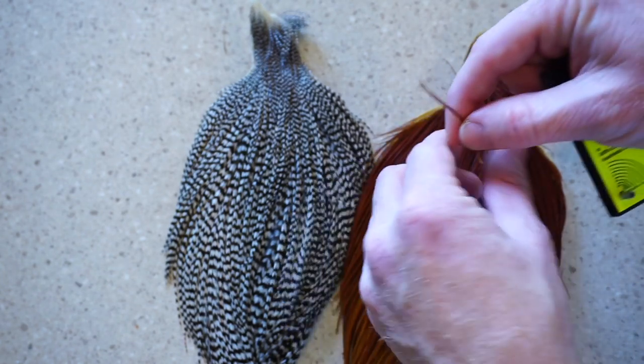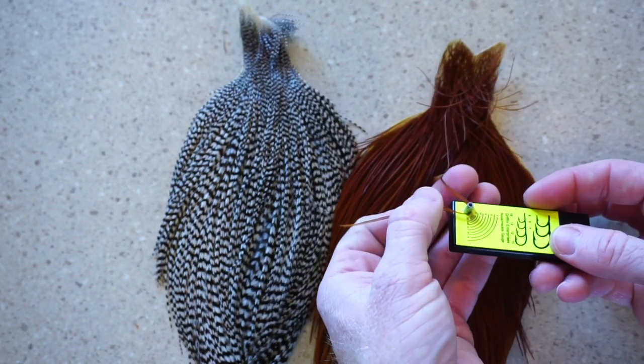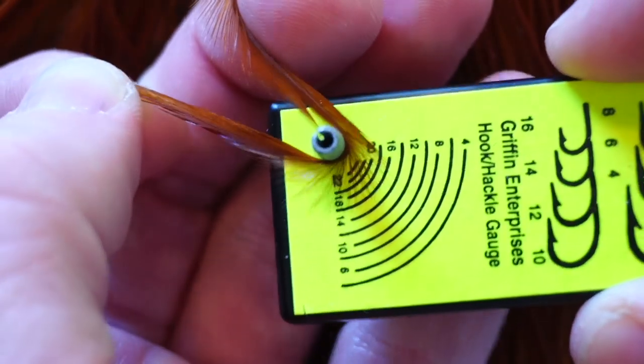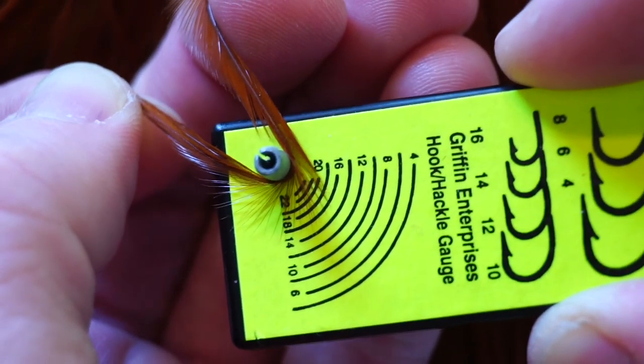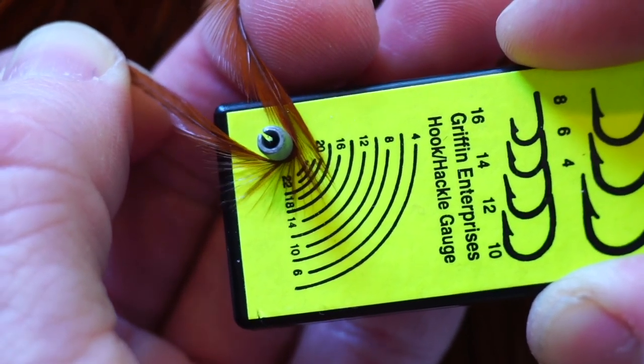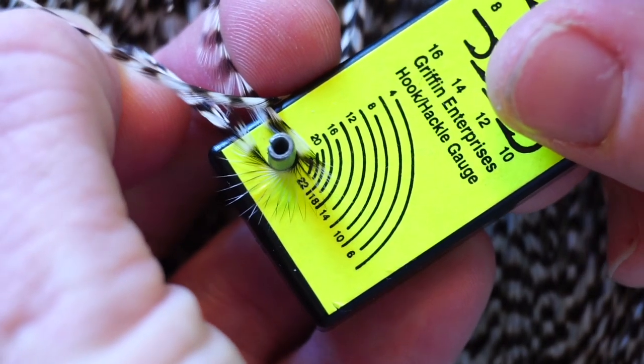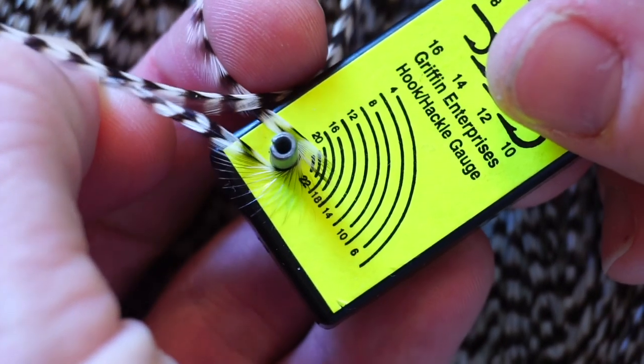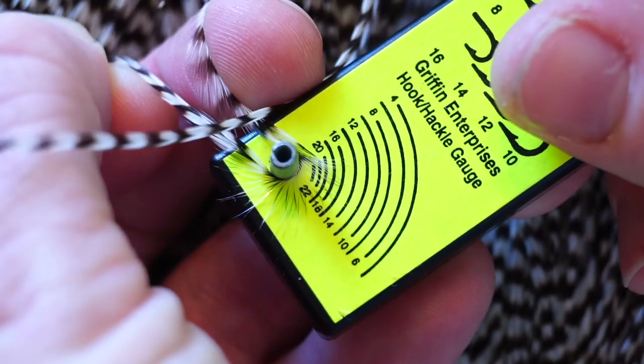Now we need size 16 hackle. However, many people say the benefit of tying parachute flies is it allows you to up the hackle size. This should give more buoyancy and be easier to find hackle that will fit a smaller fly. So here are grizzly and brown hackles in size 14. Let's give it a try with the larger hackle.